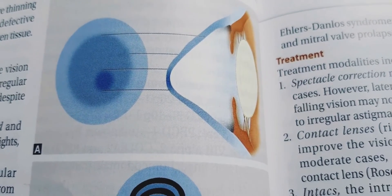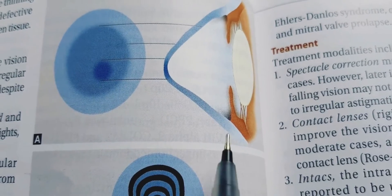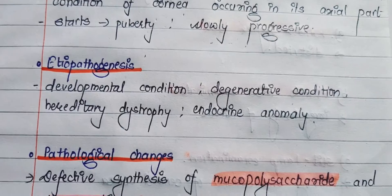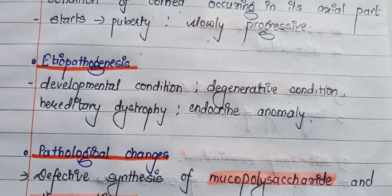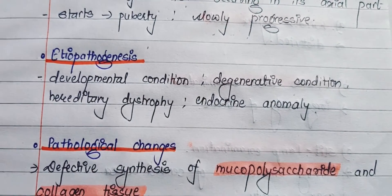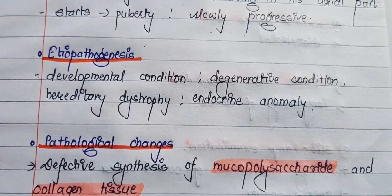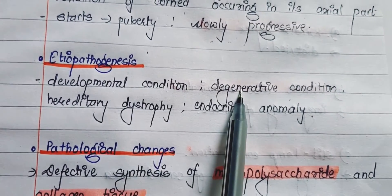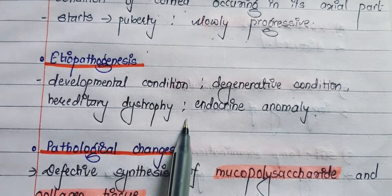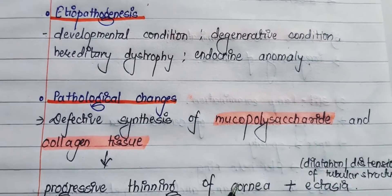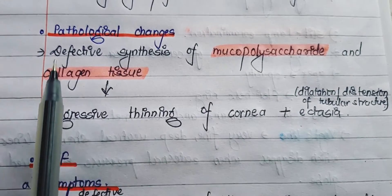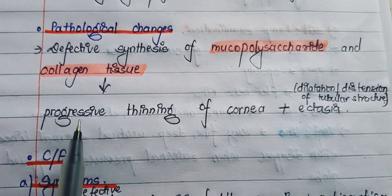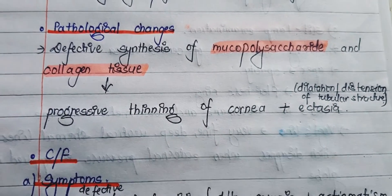This is a diagrammatic representation of keratoconus and here we can see that the shape of the cornea is cone-shaped. The etiopathogenesis of keratoconus is still not clear, but various theories proposed so far have labelled it as a developmental or degenerative condition, hereditary dystrophy, or an endocrine anomaly. Pathologically, there is defective synthesis of mucopolysaccharide and collagen tissue, resulting in progressive thinning of the cornea with ectasia.